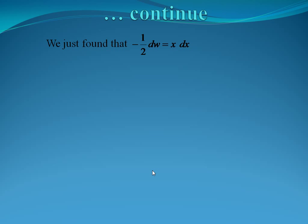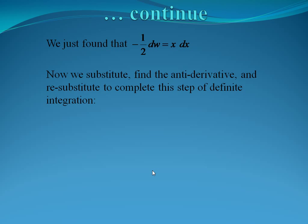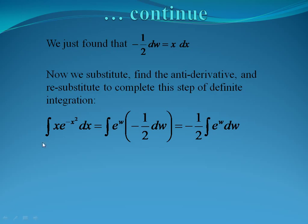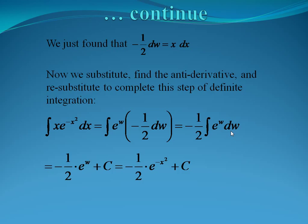So negative one half dw equals x dx. We want to substitute, find the antiderivative, and resubstitute. Our original function is xe to the negative x squared dx. Since w is negative x squared, we plug that in as our substitution, and instead of x dx we substitute in negative one half dw. The negative one half is a constant, so we pull it out front: negative one half integral of e to the w dw. The antiderivative of e to the w is just e to the w, so our general antiderivative is negative one half e to the w plus c. Plugging back in, we get negative one half e to the negative x squared plus c.